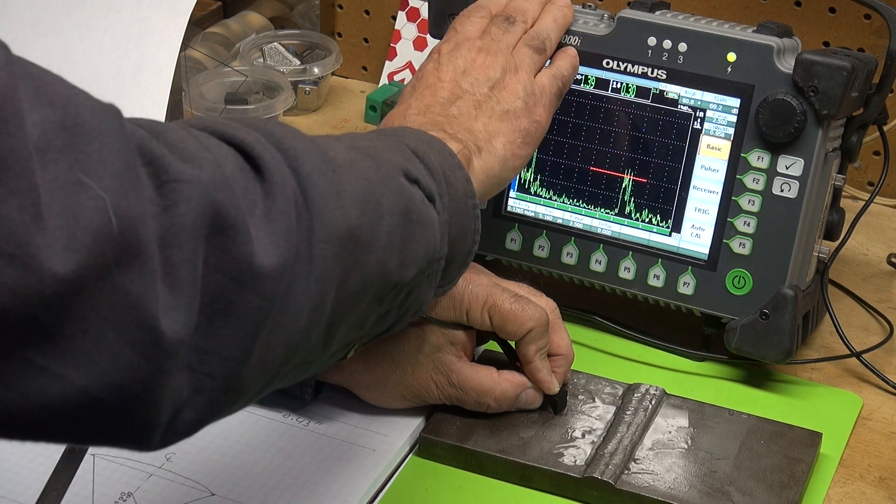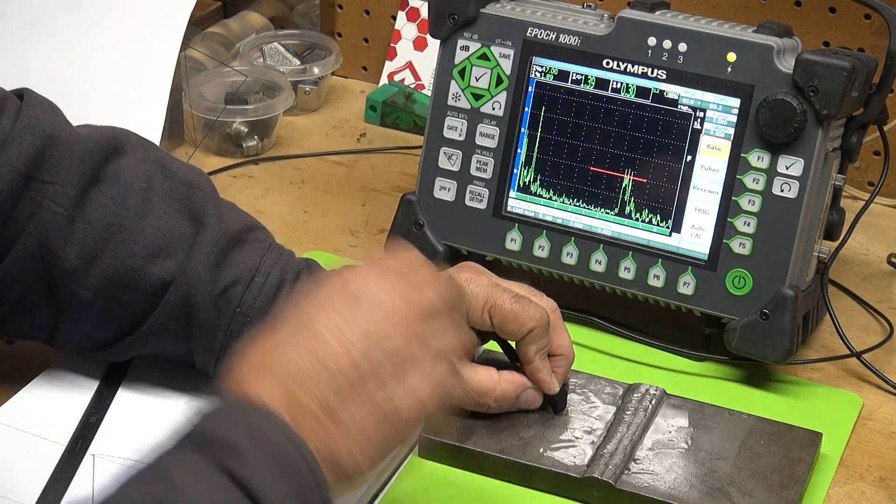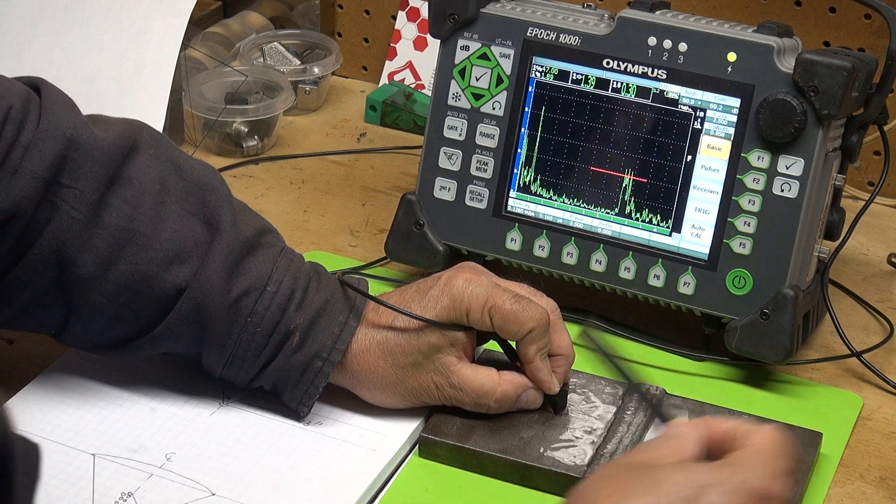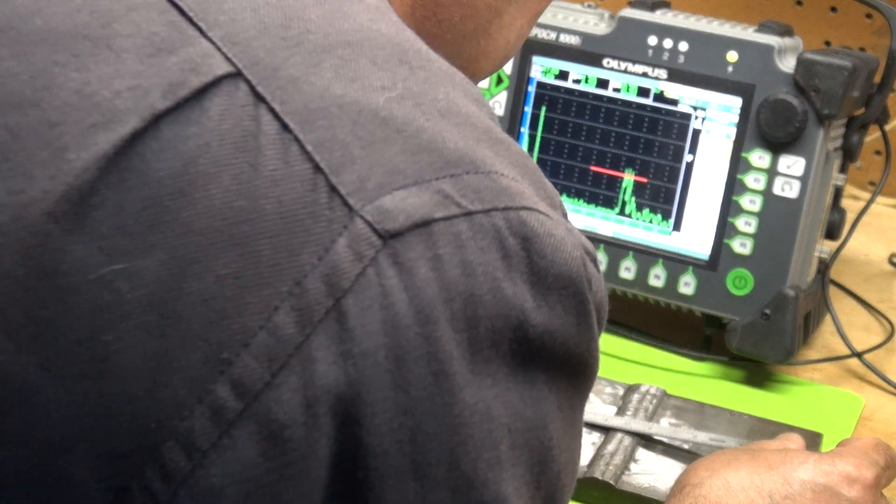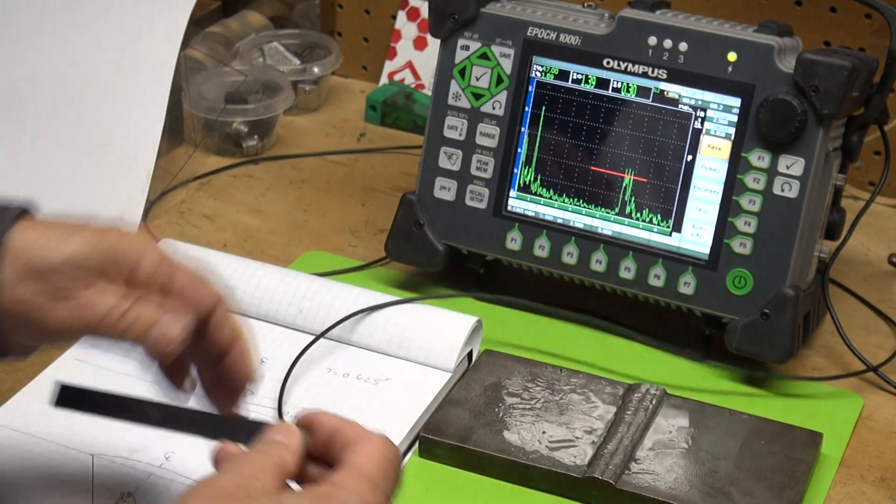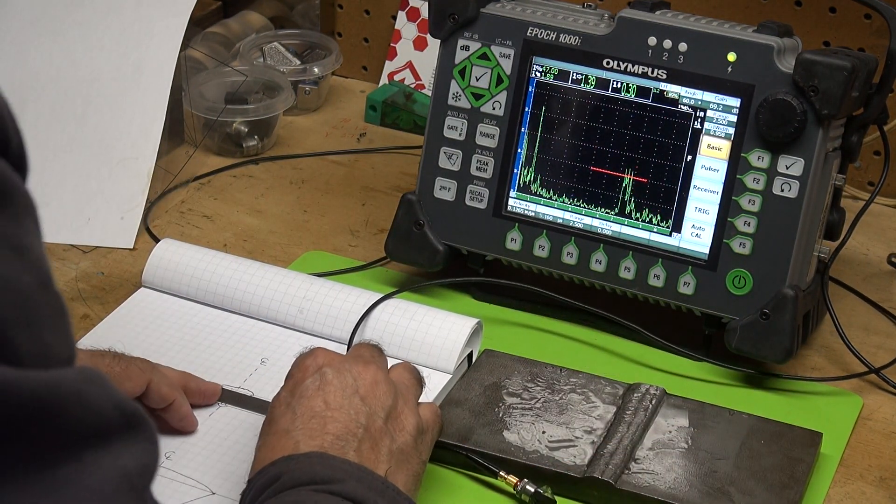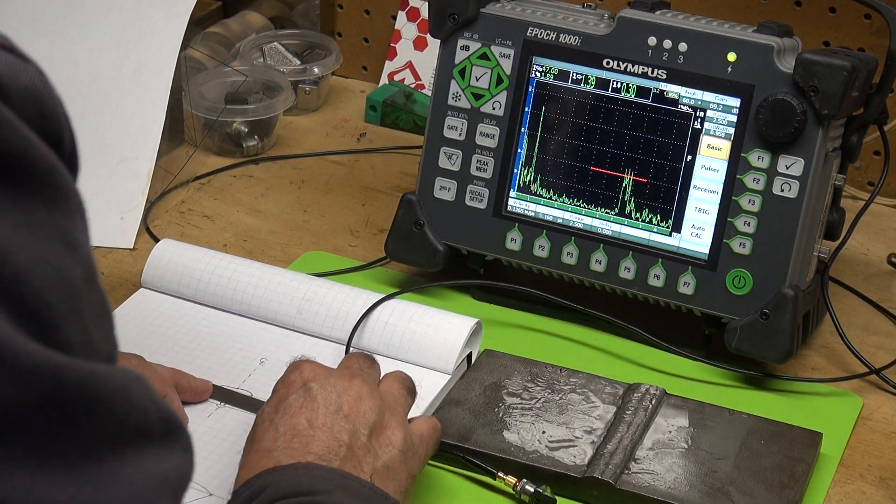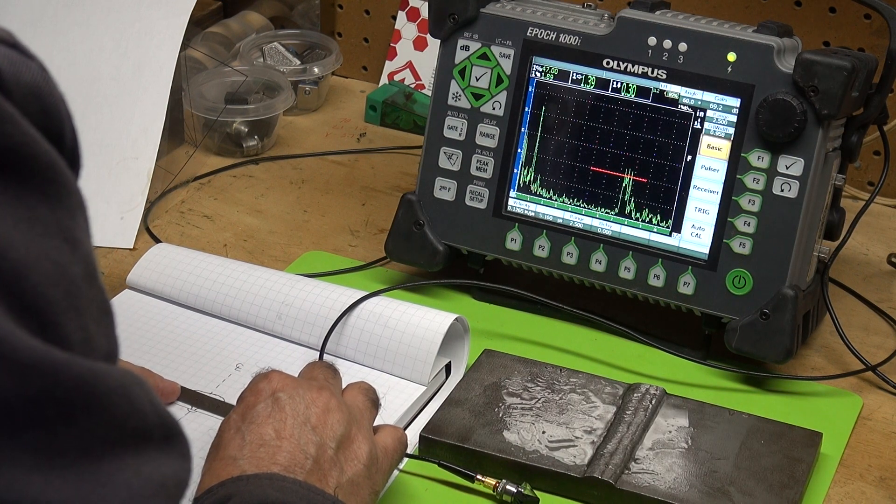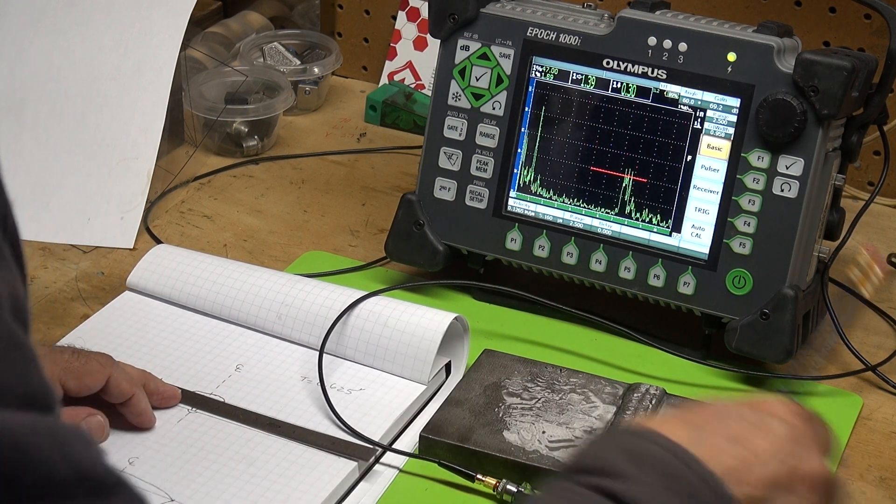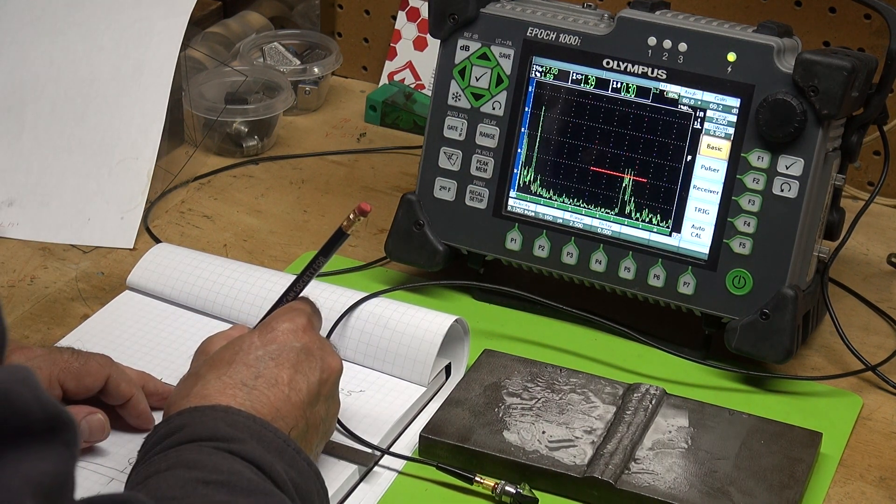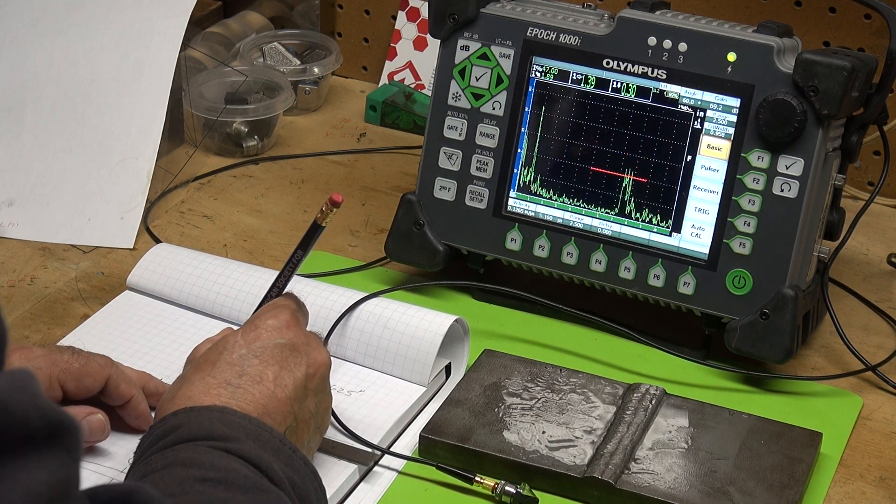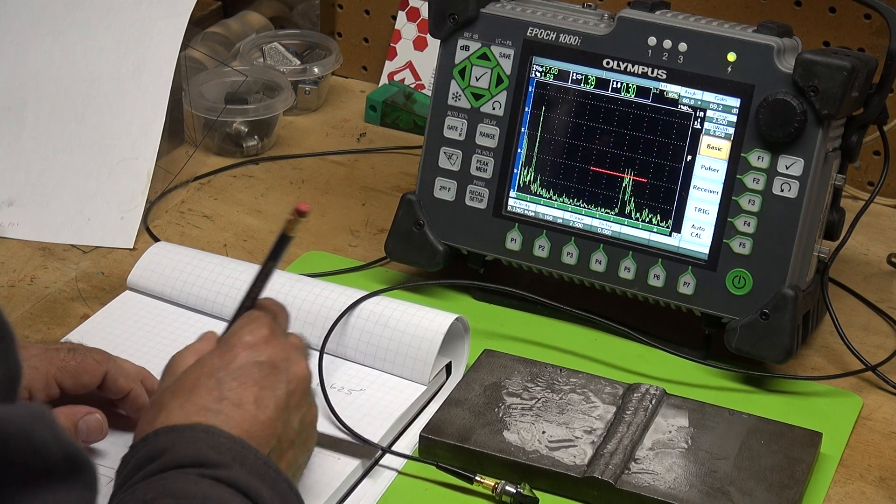Let me freeze this. I'm about 1.1 inches, the front of my wedge is about 1.1 inches from the toe of the weld. So back here, it says 1.39 and then at the depth of 0.3.